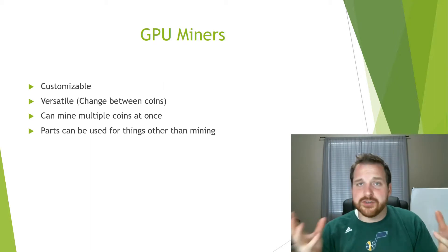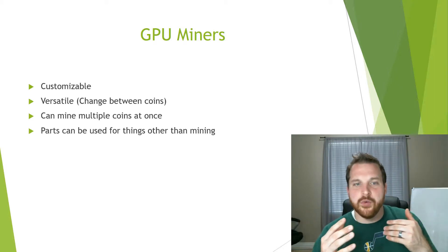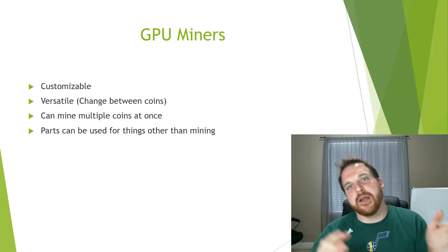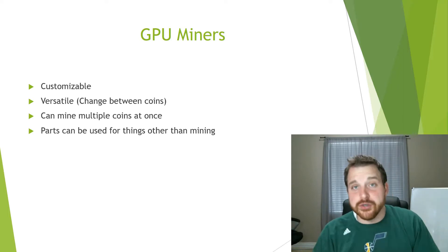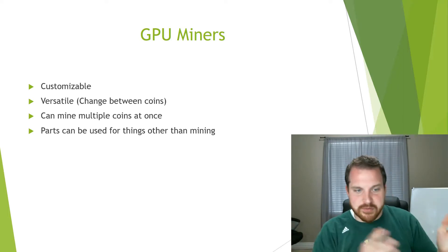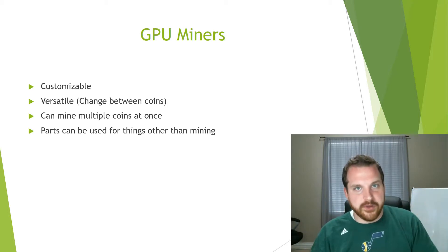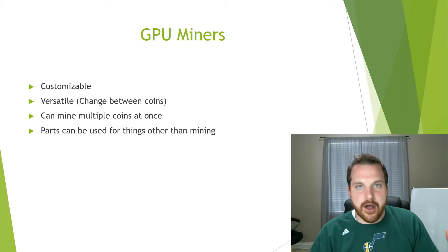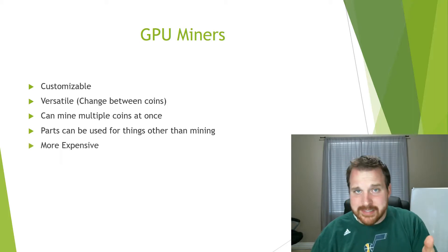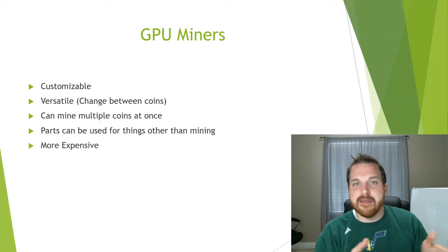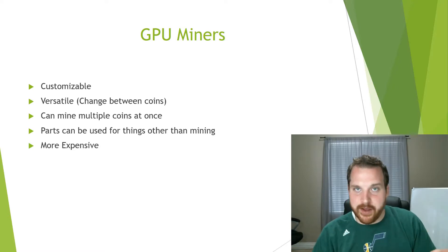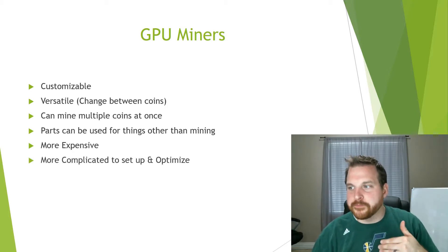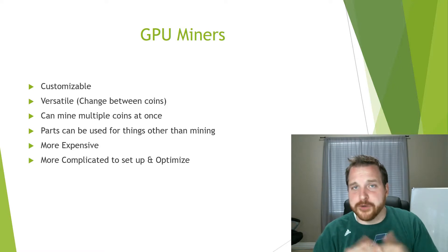The parts in a GPU rig can be used for other things — if you want to stop mining, you can resell the components, use the rig to play virtual reality, or use it as a regular computer. The parts are the same as those used in regular computers. An ASIC miner doesn't have that versatility for resale once you're done with it. GPU rigs are more expensive — it can cost a lot more to get the same hash rate that an ASIC miner achieves, so you're essentially paying more for versatility.